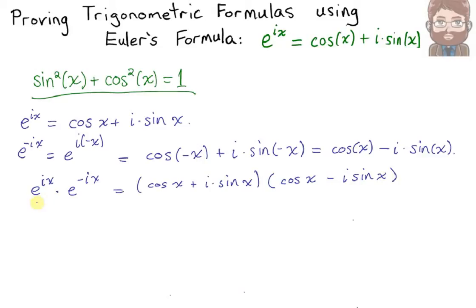Now, on the left-hand side, we have the same base. These exponents, we'll add them together, get zero for an exponent, and e to the zero is one.